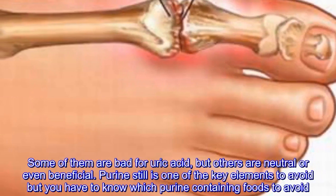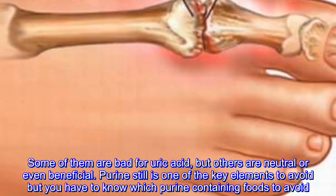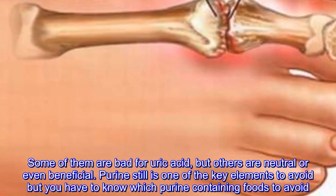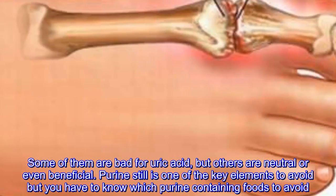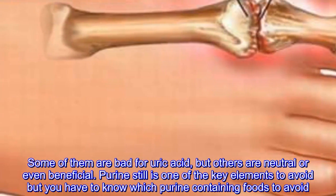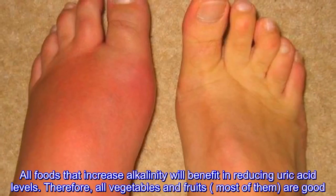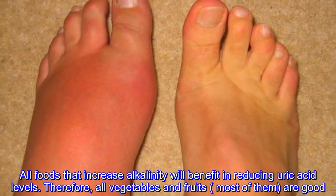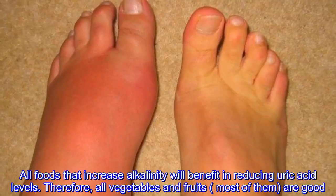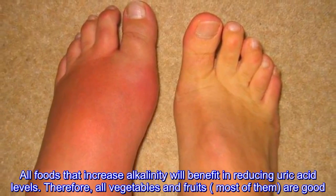Purine for years was considered the root cause of raised uric acid levels, but not all purine-containing foods are the same. Some are bad for uric acid, but others are neutral or even beneficial. Purine is still one of the key elements to avoid, but you have to know which purine-containing foods to avoid.